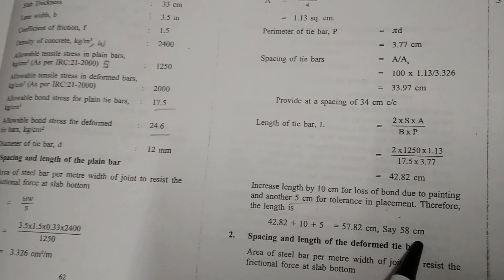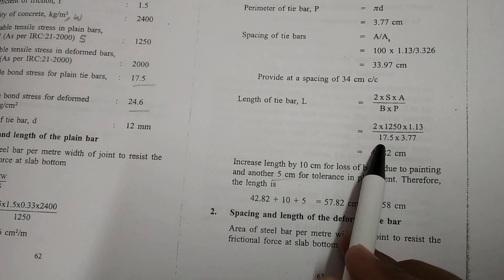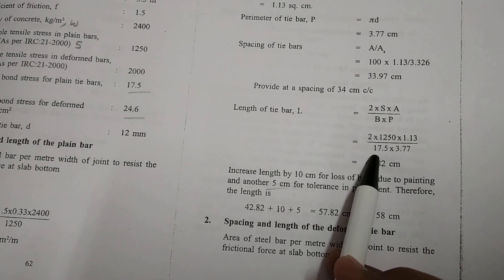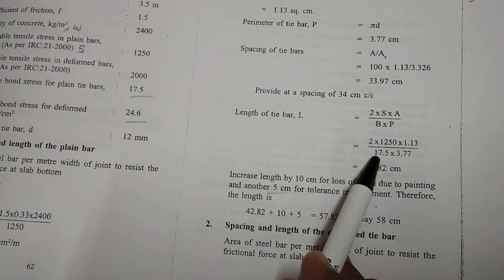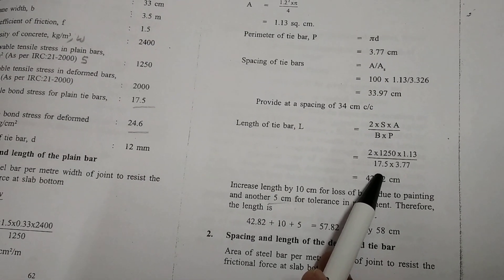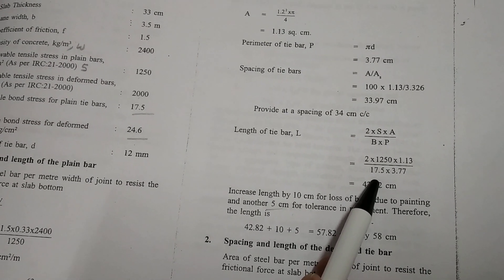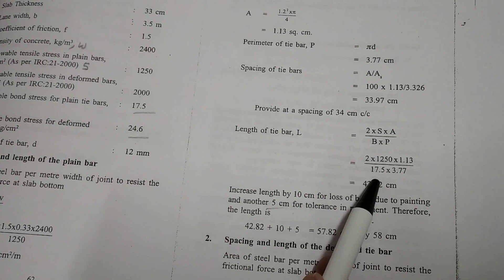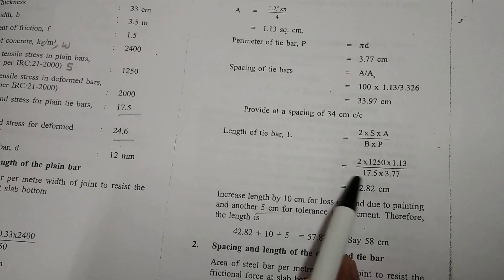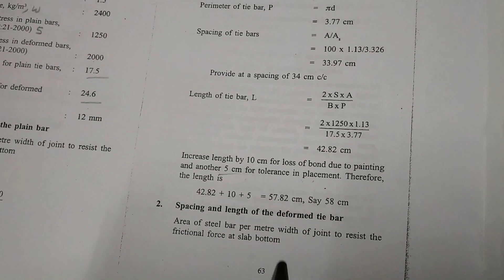Now one important thing is here. B here is allowable bond stress in plain tie bar. If this value is not given in the question during your examination, only it is mentioned that allowable bond stress by IRC code 58-2002, you have to just write 17.5. If this is mentioned in the question directly you can substitute. Likewise we will solve for deformed bars.